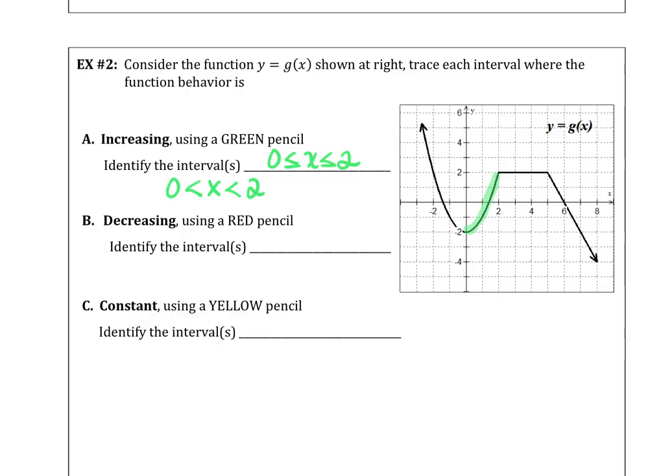The function is decreasing. We're going to use a red pencil to identify those areas. So switching over to our marker. I am decreasing from negative infinity to the minimum point. And then we're decreasing from 5 to infinity.